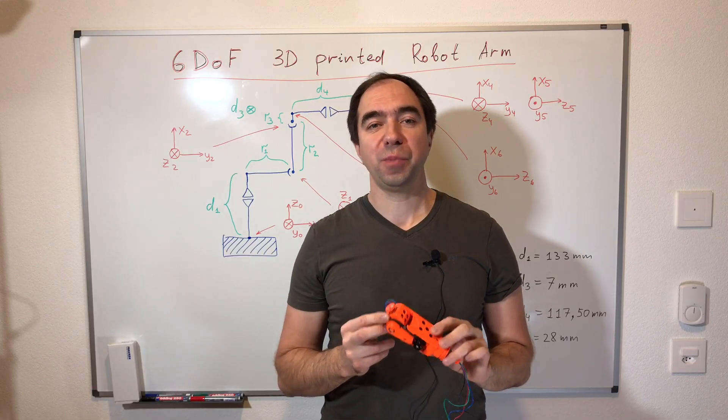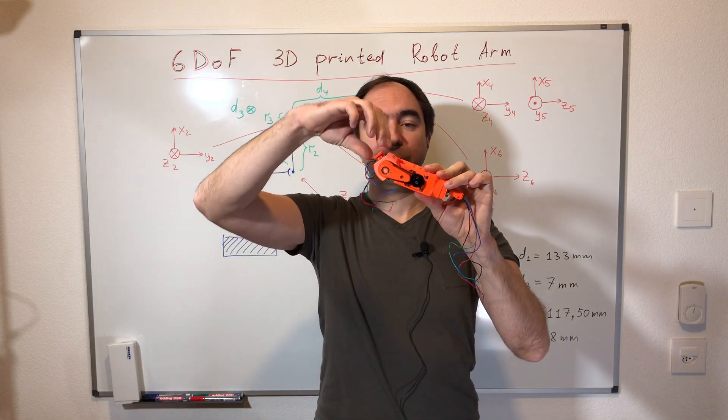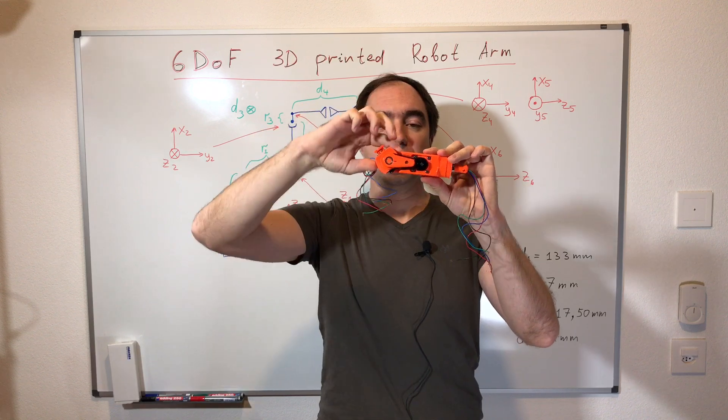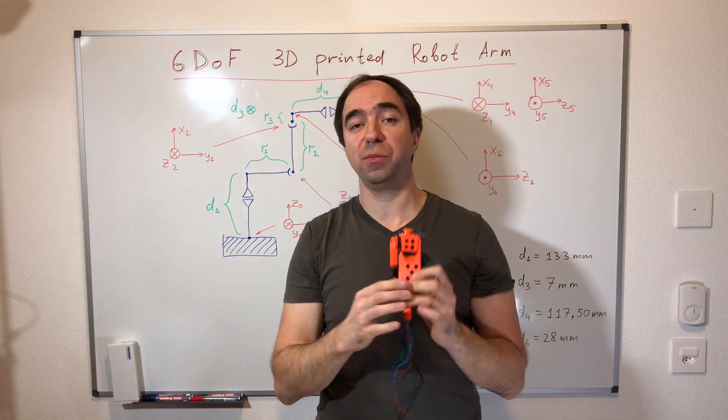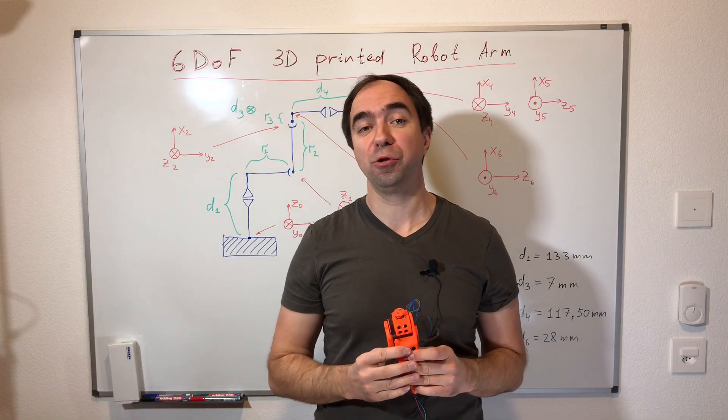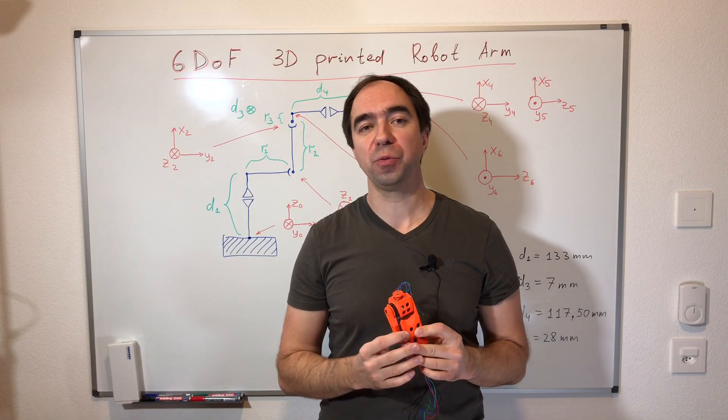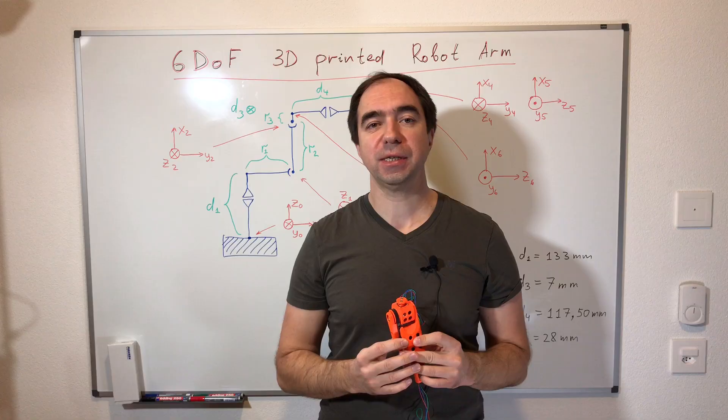So today we assembled part of the robot. We assembled axis number six and axis number five. In the next videos we are going to continue to assemble this robot. So please subscribe to this channel in order not to miss this. And also support me on my Patreon page. See you next time!